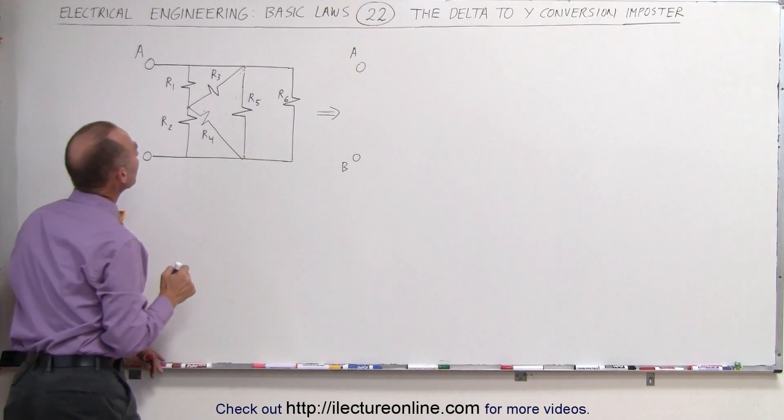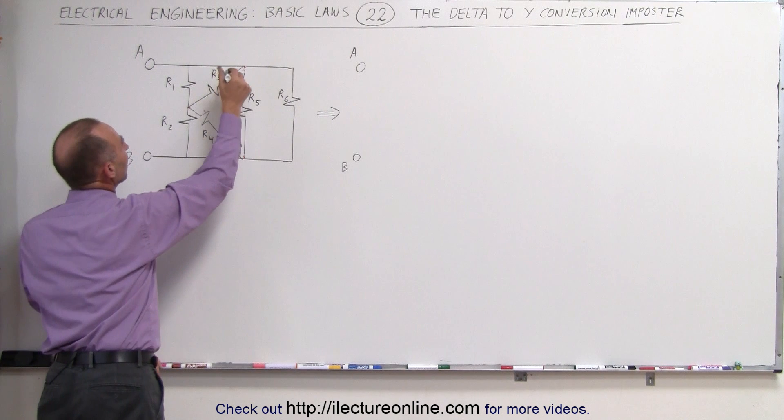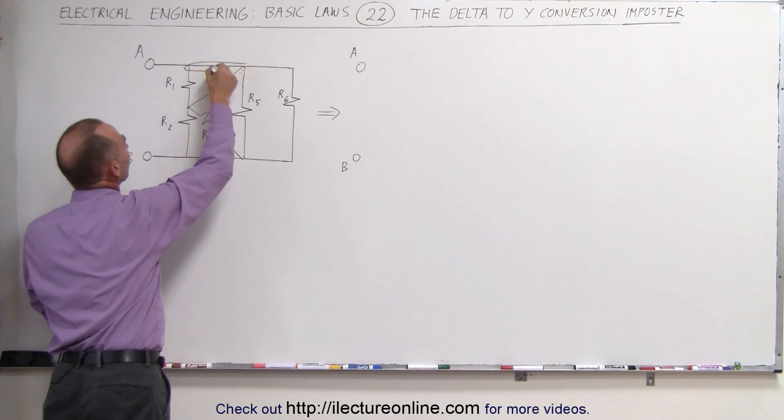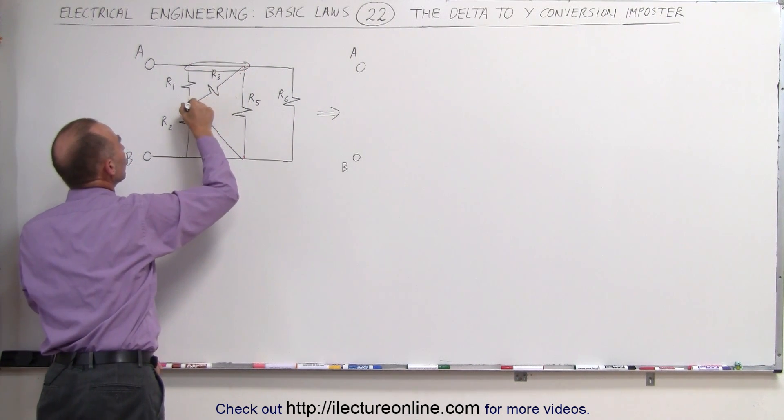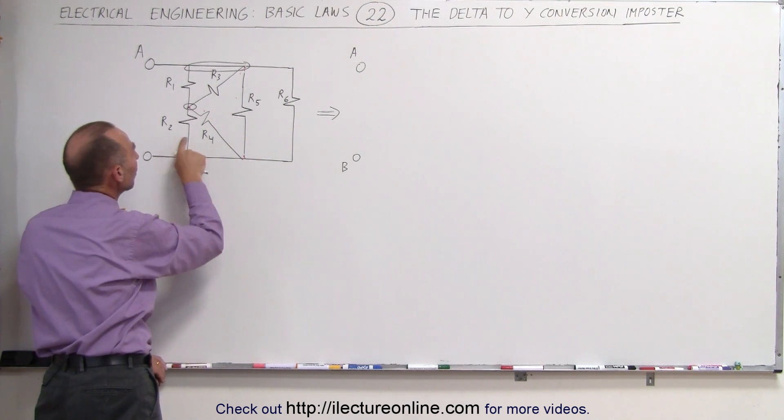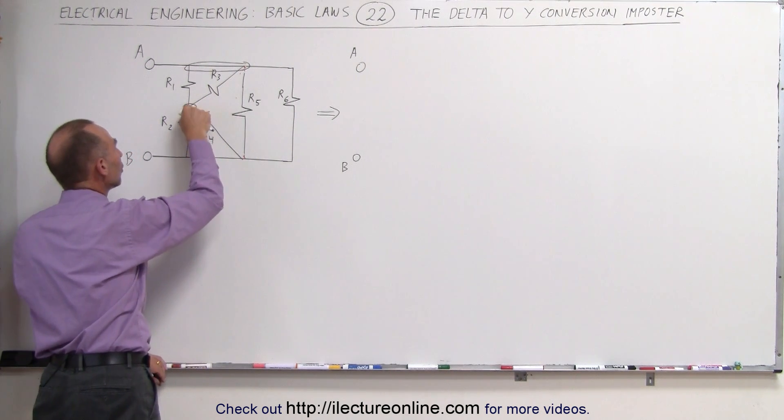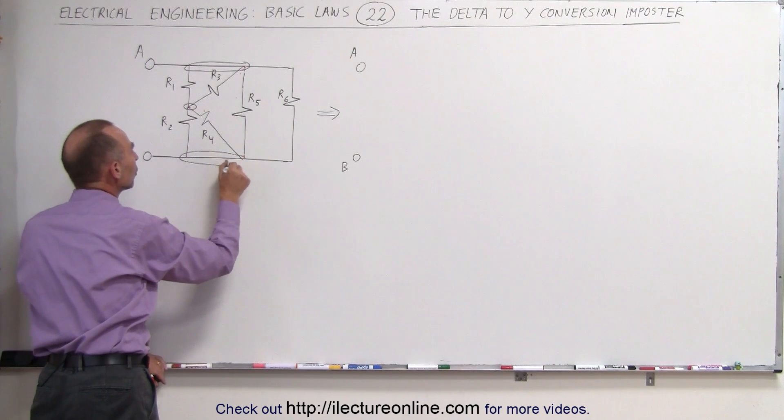What we're going to do here is realize that R1 and R2 are actually in parallel because they share a node over here and they share a node over there. Likewise, R2 and R4 are in parallel because they share a node over there and they share a node over here.